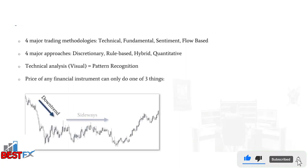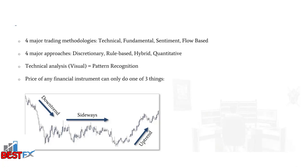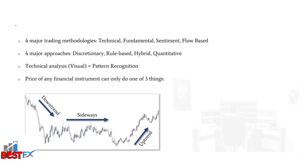If we look at the price of any financial instrument, it can only do one of three things: it can either move down, move sideways, or move up. As traders, we are interested in directional moves — price has to either move up or move down for us to make money. If price doesn't move at all, we can't make any money. So we are directional traders looking for directional moves in the market.